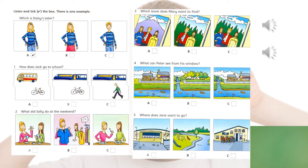Which is Daisy's sister? Look, there's my sister. Which one is she, Daisy? She's got long blonde hair. Oh yes, I see. And she's wearing a blue sweater? Yes, and jeans. Can you see the tick? Now you listen and tick the box.